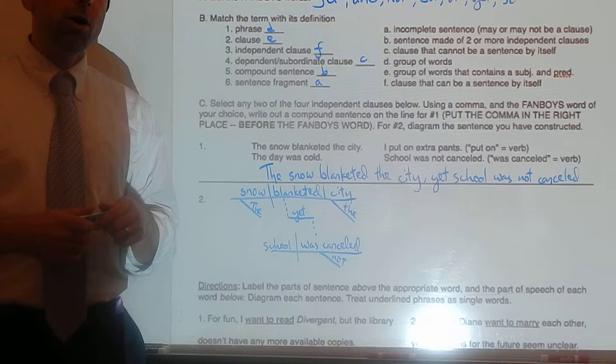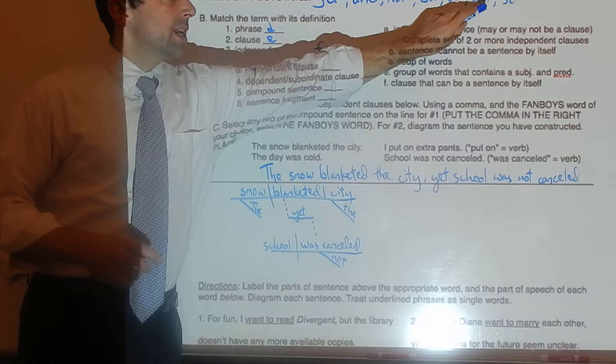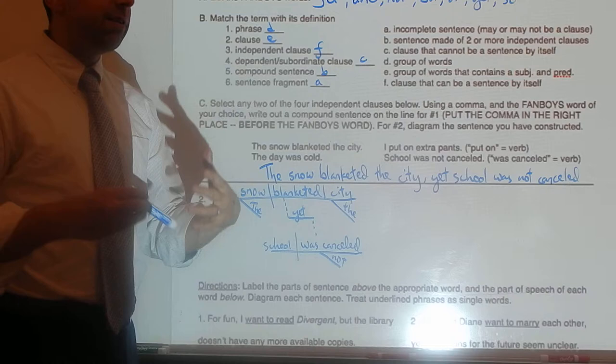The FANBOYS words — for, and, nor, but, or, yet, so — they are the coordinating conjunctions, words that join together things that are equal in value.